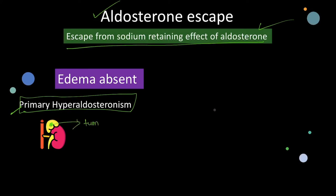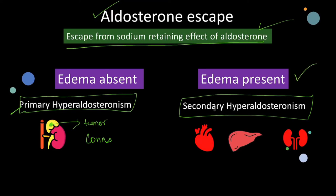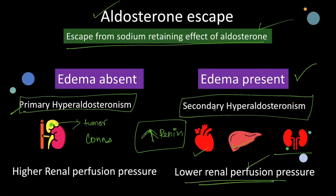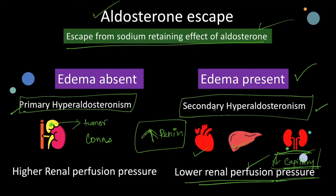In primary hyperaldosteronism, the increase in aldosterone is due to hyperplasia or a tumor of the adrenal cortex, referred to as Conn's syndrome. But in secondary hyperaldosteronism there is edema. Secondary hyperaldosteronism is due to increased levels of renin. In most conditions of secondary hyperaldosteronism, like cardiac failure, liver disorder, or renal artery stenosis, the renin level increase is due to a decrease in renal perfusion pressure. Decreased renal perfusion pressure is reflected in the capillaries as decreased capillary hydrostatic pressure. Since the compensatory mechanism works due to increased hydrostatic pressure in the peritubular capillaries, the decreased capillary hydrostatic pressure in secondary hyperaldosteronism cannot increase sodium excretion, and the compensatory mechanism does not work, so volume continues to expand and there is edema.